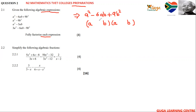The factors of 9 are 3 and 3. The a squared is positive, so when we map 3b and 3b, it should give us positive. Negative times negative gives us positive, and positive times positive gives us positive. So here we take the negative sign — we place negative on both 3b terms, giving us negative 3b in each bracket.